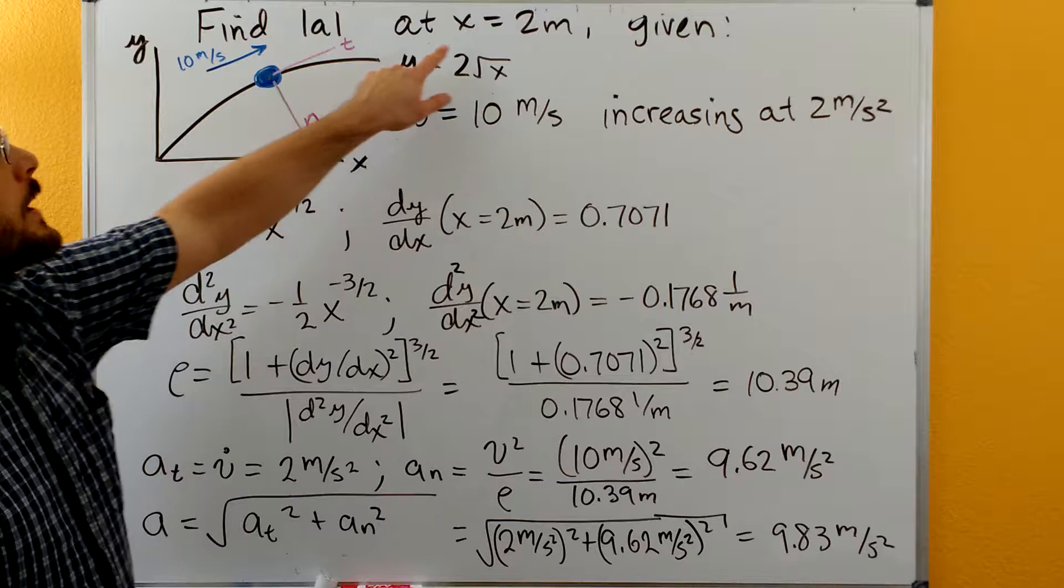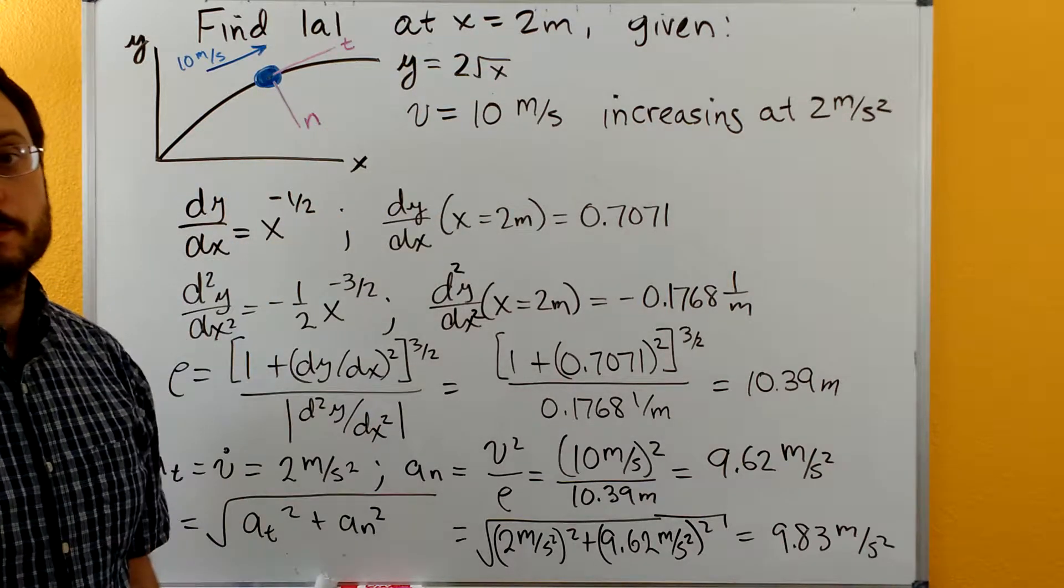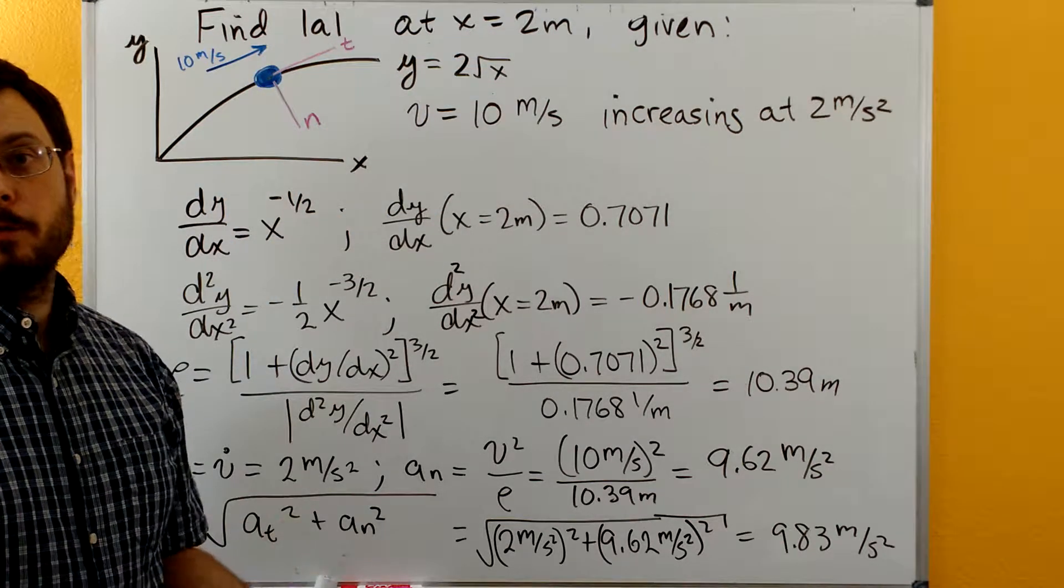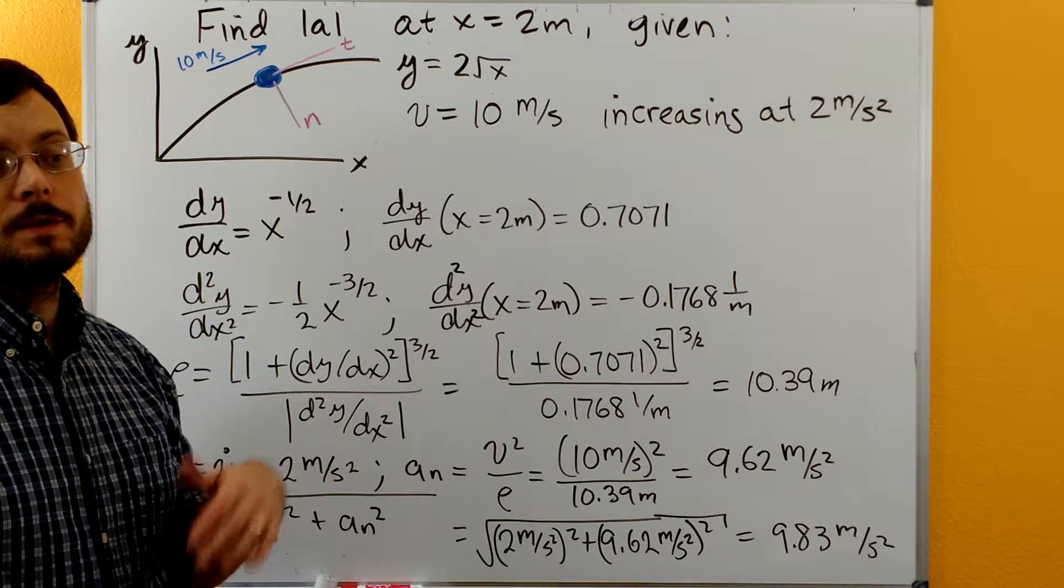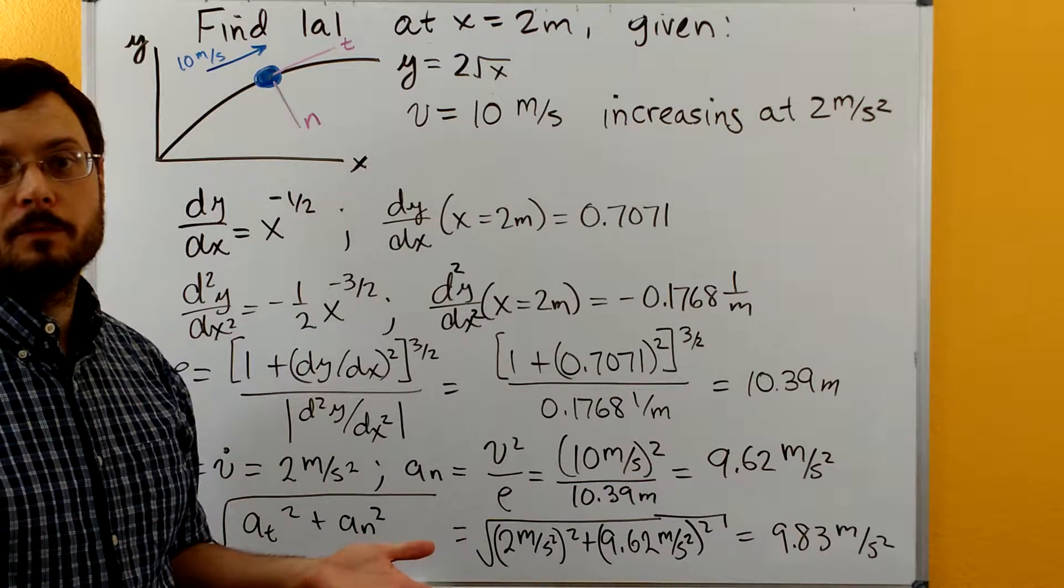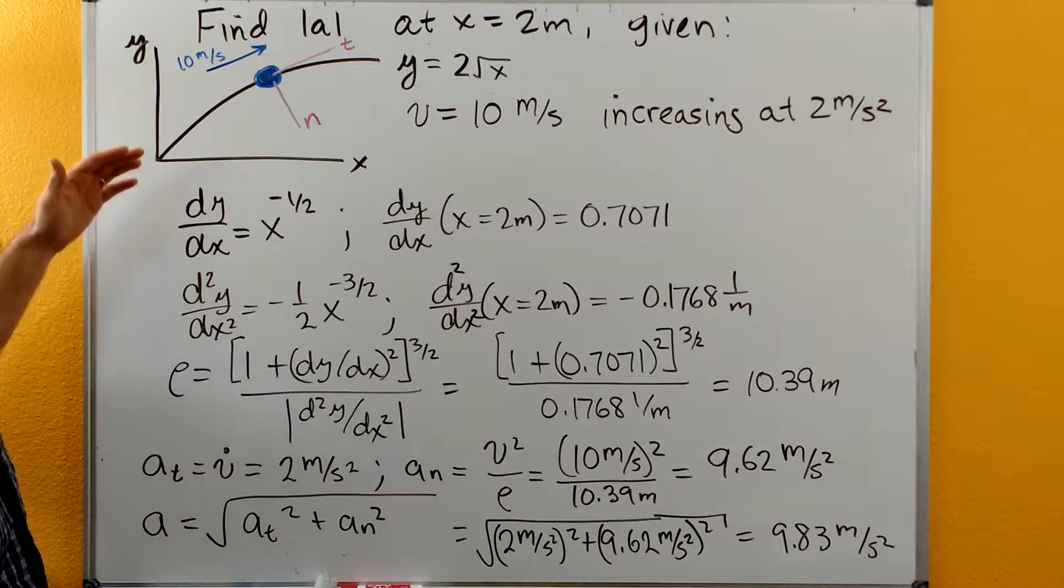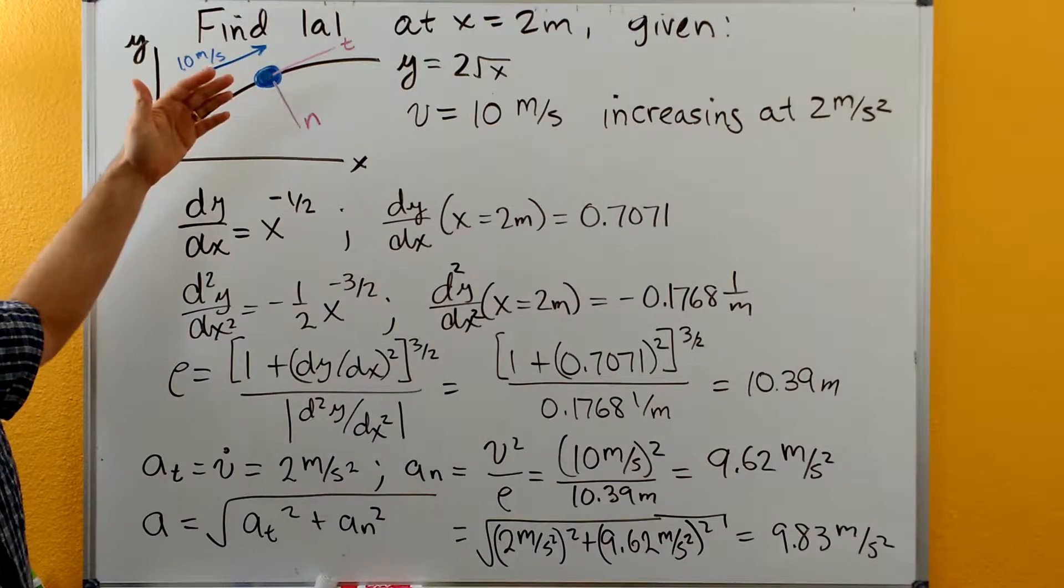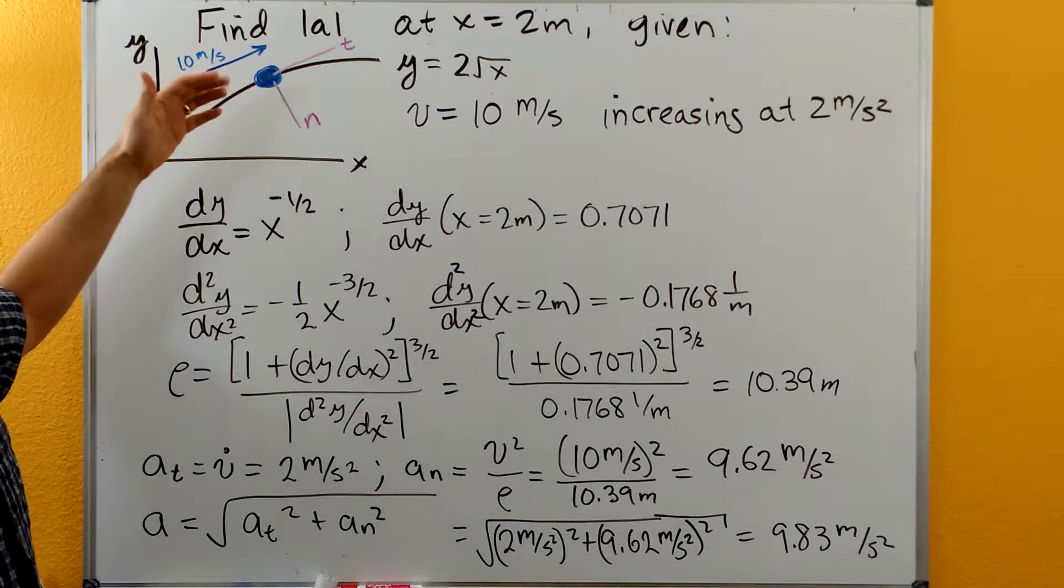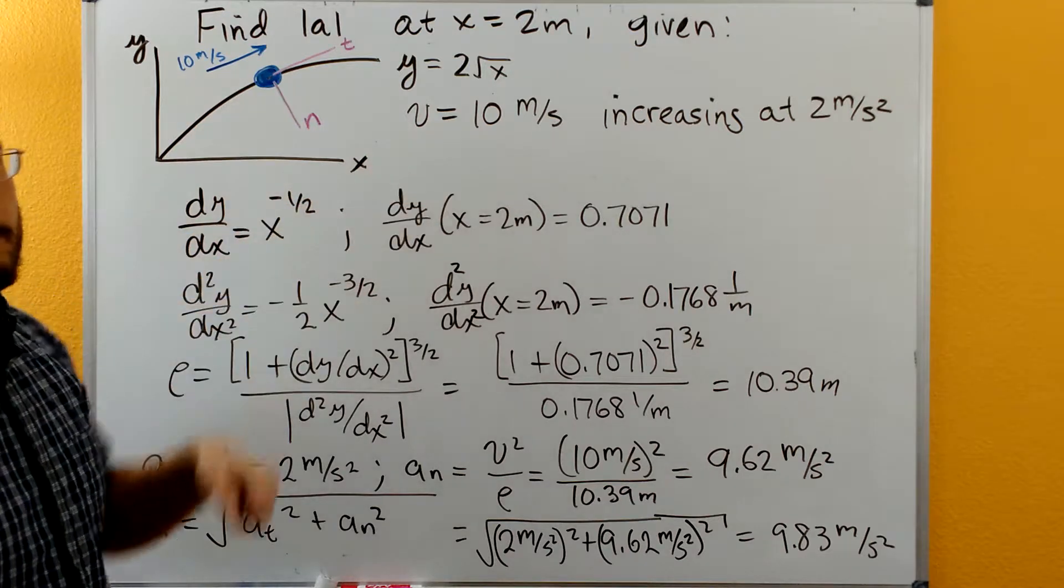And this is happening when x is at two meters. So we don't have really any information about just the x or the y component of the velocity, but we can go ahead and apply normal and tangential coordinates on this one and solve it fairly easily from what we're given.